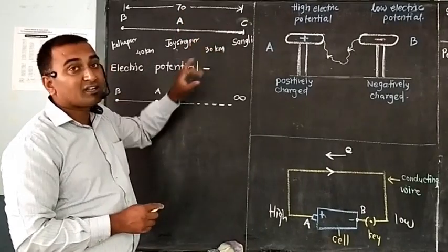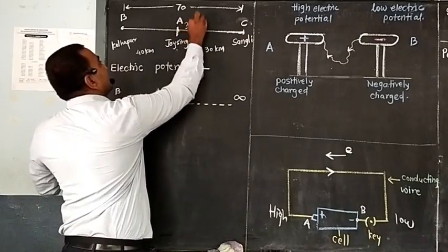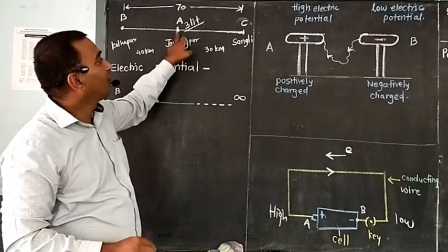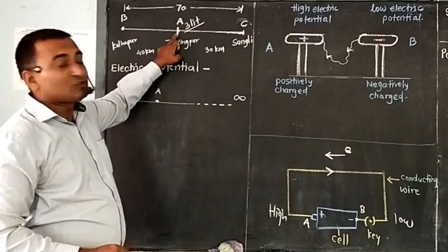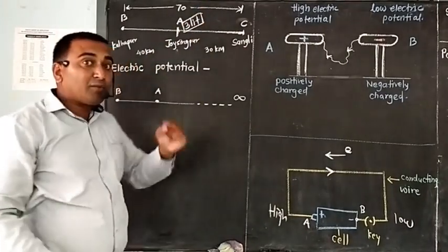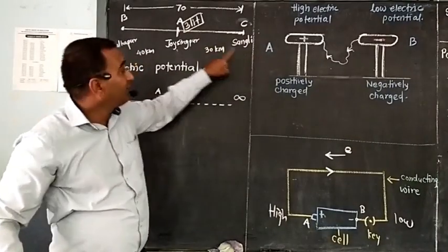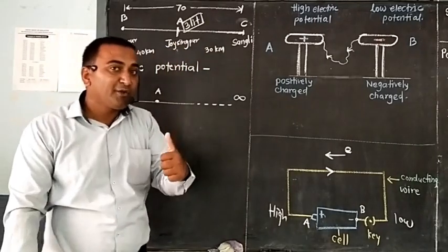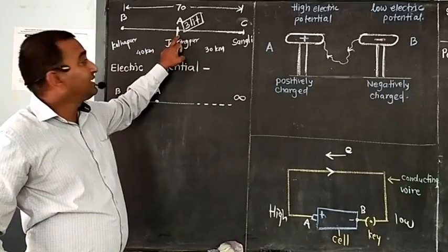Because of work done of 3 litres — consumption of 3 litres of petrol will transfer that vehicle from Sangli to Jaisingpur. So, 3 litres is considered as the petrol potential of Jaisingpur. Because the vehicle is in Sangli and has to be brought to Jaisingpur, the work done is of 3 litres. So, Jaisingpur's petrol potential is 3 litres.